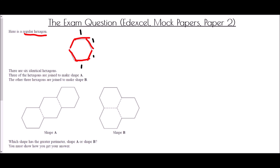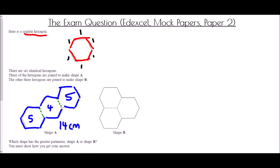Since we haven't been told the side length, we treat each side as one unit — one centimeter long. In Shape A, three hexagons are put together and the shared edges become dashed lines, which no longer count toward the perimeter. Walking around Shape A: the first shape contributes five sides, the second contributes four, and the last contributes five again. So the total perimeter is five plus four plus five, which is fourteen centimeters.